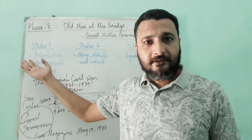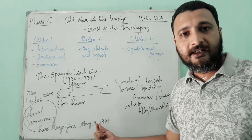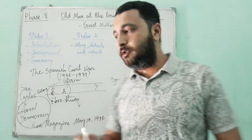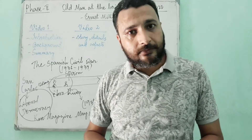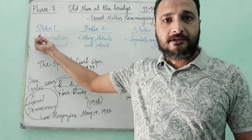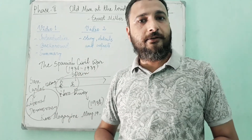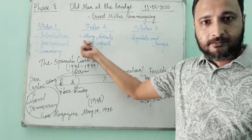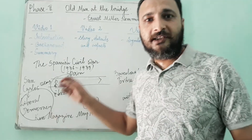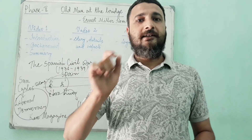So this is the introduction and background. In the background, you need to remember the Spanish Civil War 1936–39, first published in May 1938. This event of the conversation between the narrator and the old man happens in 1938, which forms the basis for this short story. I hope you understand the introduction, background and summary of the story 'Old Man at the Bridge.' Now we will move to video 2, where I will discuss the story details and the different aspects associated with it. Thank you for watching this video — you can click to video 2 to know about the story in more detail. Thank you.